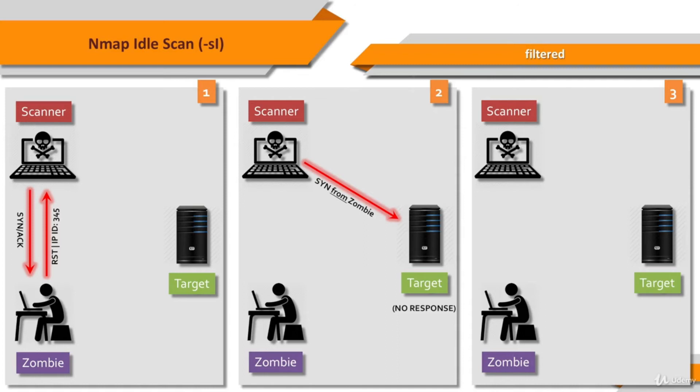The third step is to probe the zombie's IPID again. The attacker sends a SYN/ACK to the zombie again. The RST packet of the zombie has an IPID which is increased by only one since the first step, so the port is not open. From the attacker's point of view, the filtered port is indistinguishable from a closed port. In both cases, the IPID is increased by only one.